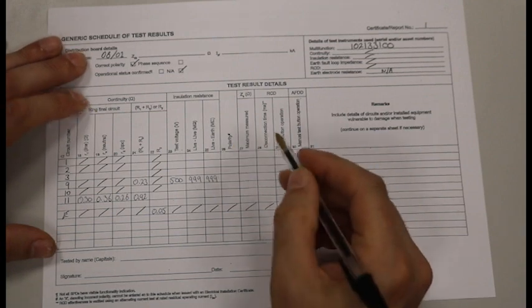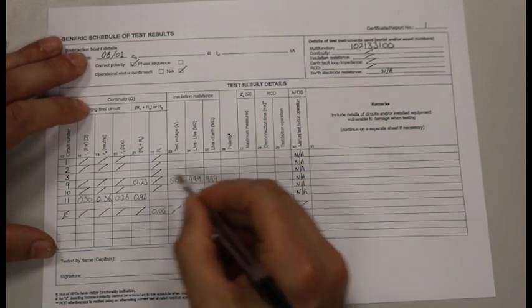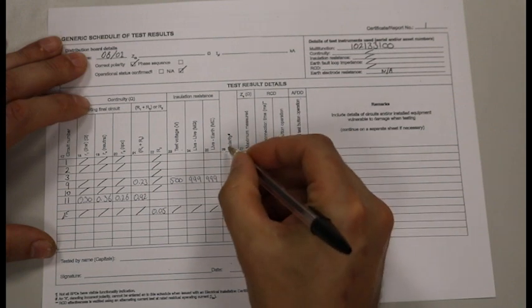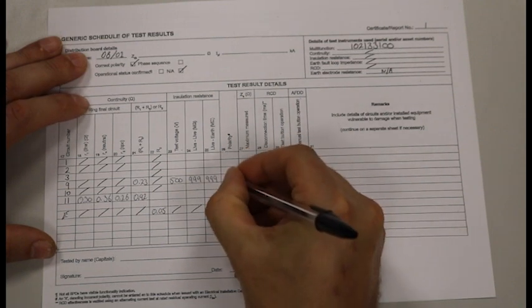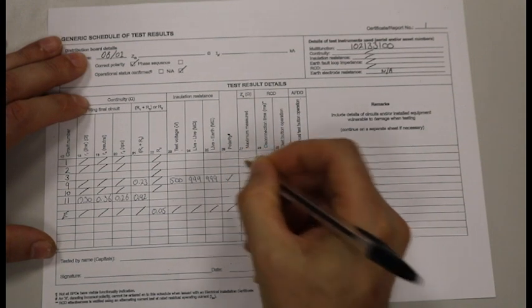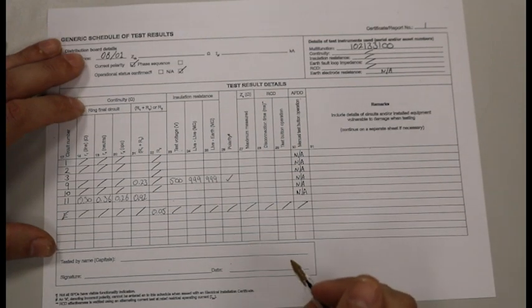We also confirmed polarity by performing our R1 plus R2 test correctly. So all we put in column 26 is a tick. And that's all we need to complete in our schedule of test results.